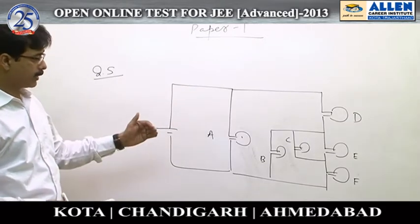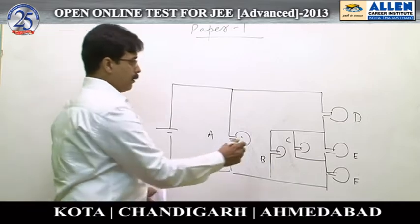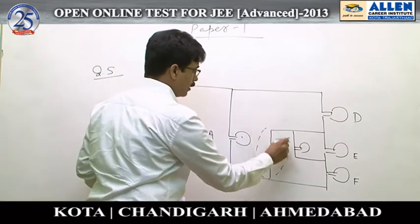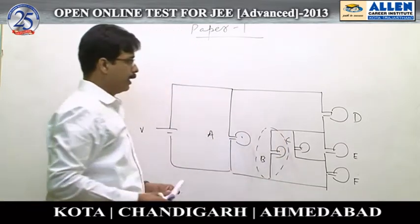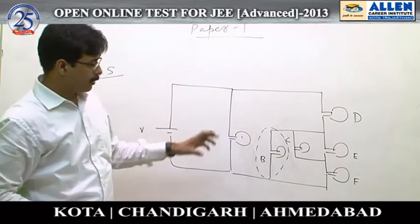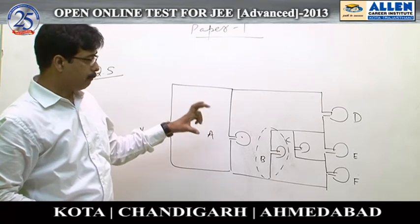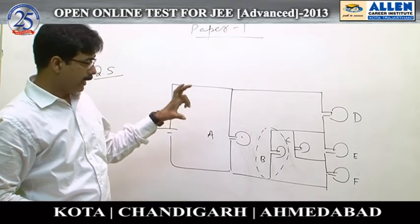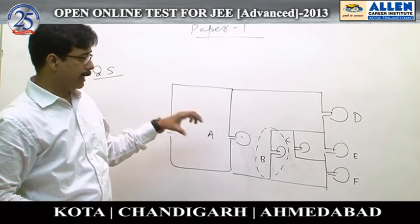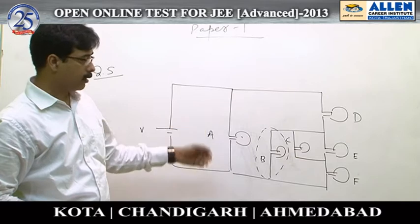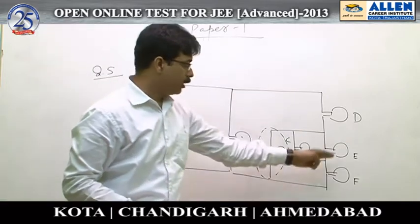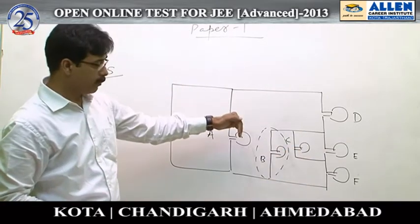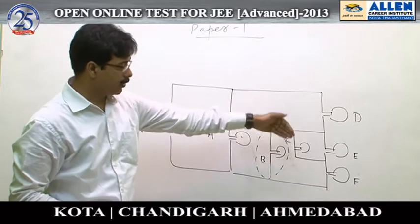Next we compare bulb B. The potential difference across B is greater than all these three bulbs, so B must be brighter than these three.